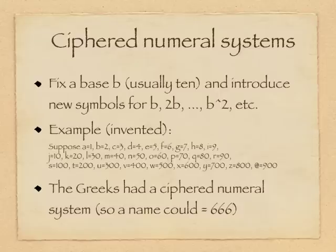Let me show you a simple example. This is invented. But let's use our current alphabet. And have A through I stand for the numbers one through nine. J stands for ten, K for twenty. Notice now we're jumping by ten, so that L is thirty, M is forty.